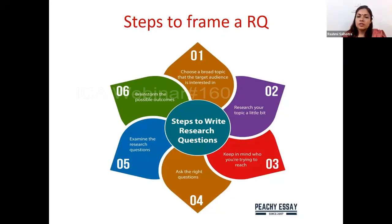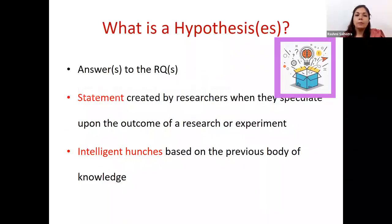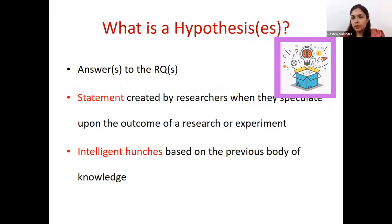Having checked the first five elements of the research question, we move to the sixth step: brainstorming possible outcomes, which brings us to the hypothesis. A hypothesis is a plausible answer to the research question — a statement created by researchers when they speculate upon the outcome of a research or experiment. Hypotheses are intelligent hunches based on previous body of knowledge. This clearly means that if there is no previous body of knowledge, the study would not have a hypothesis — only a research question. Without background research, hypothesis generation is not possible.